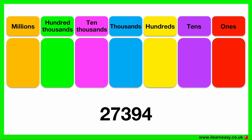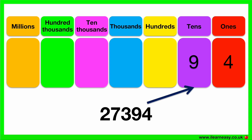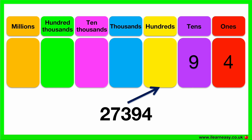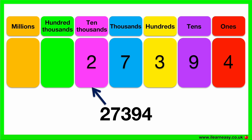Let's try another number. Here we have a five-digit number again. Let's separate out the different numbers according to their place values. The number 4 goes in the ones group, the number 9 goes in the tens group, the number 3 goes in the hundreds group, the number 7 goes in the thousands group, and the number 2 goes in the ten thousands group. So this number is 27,394.